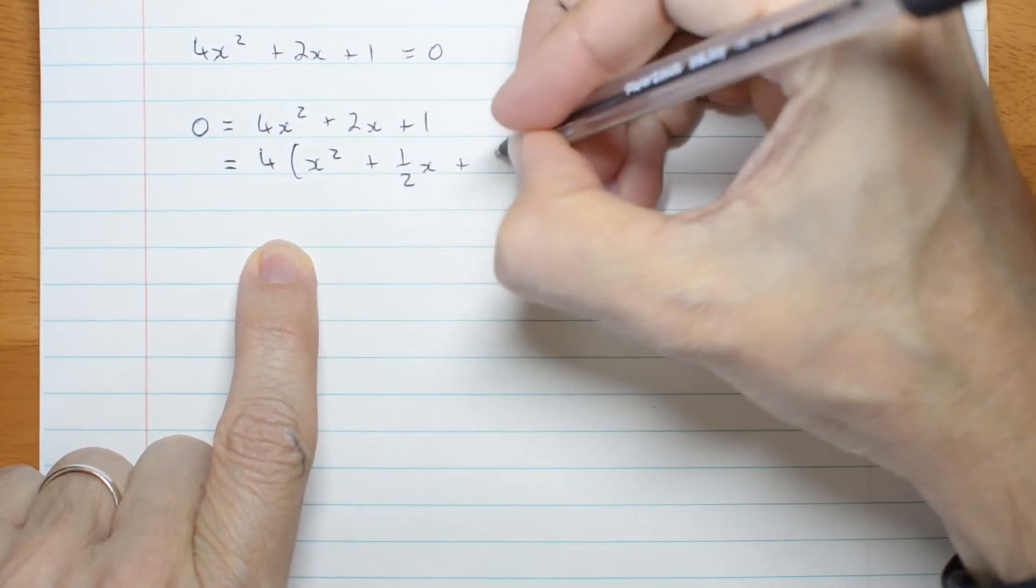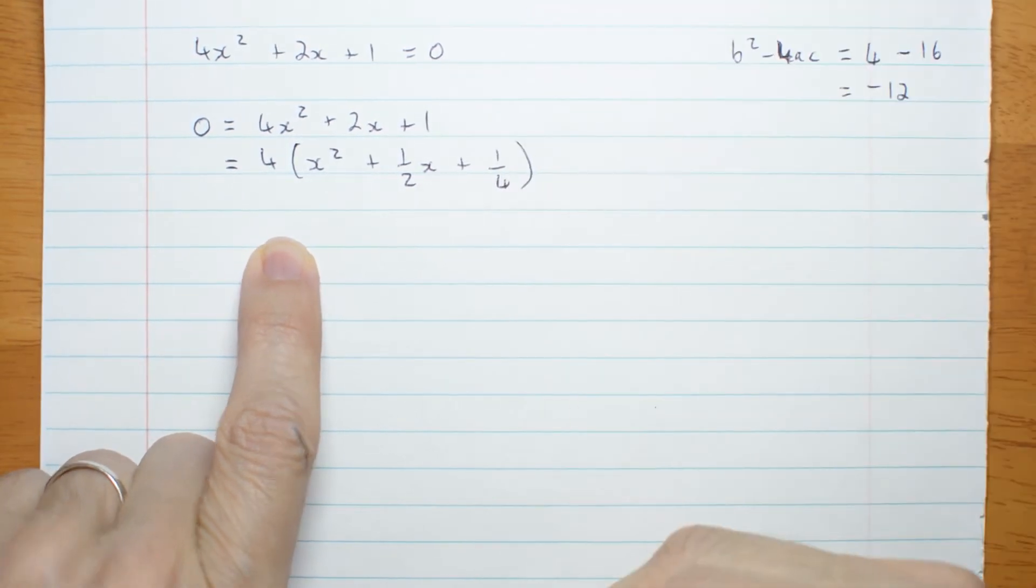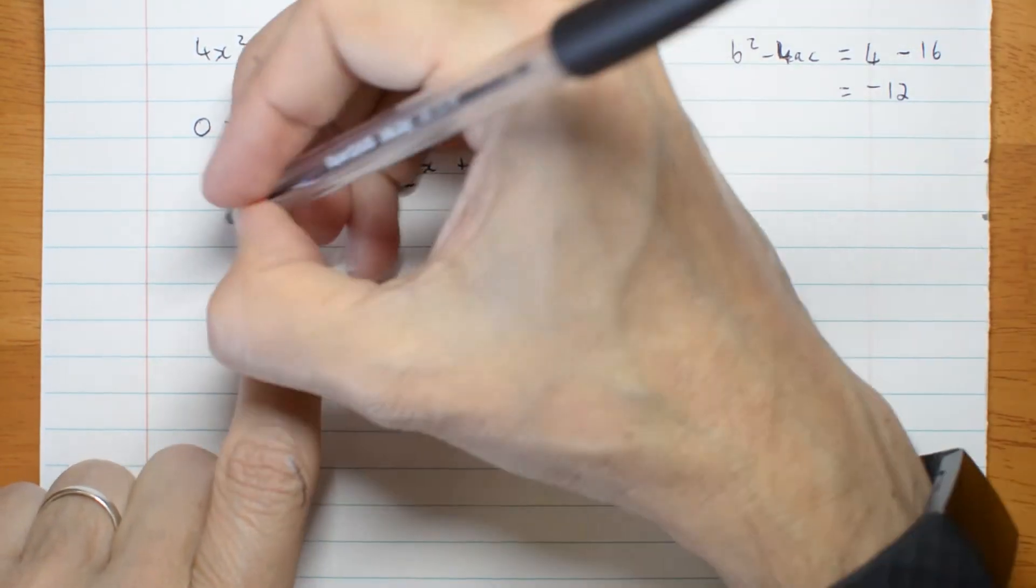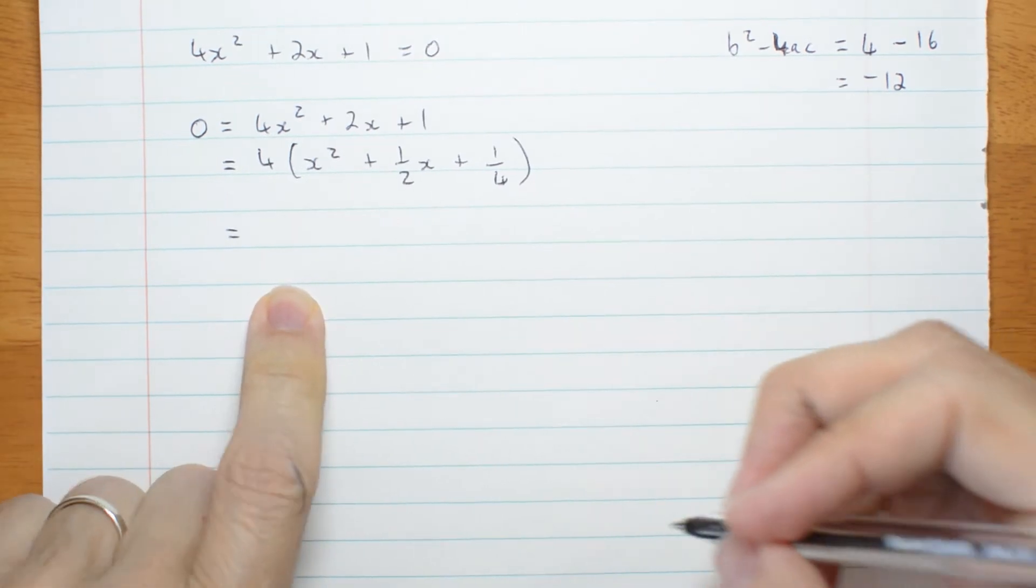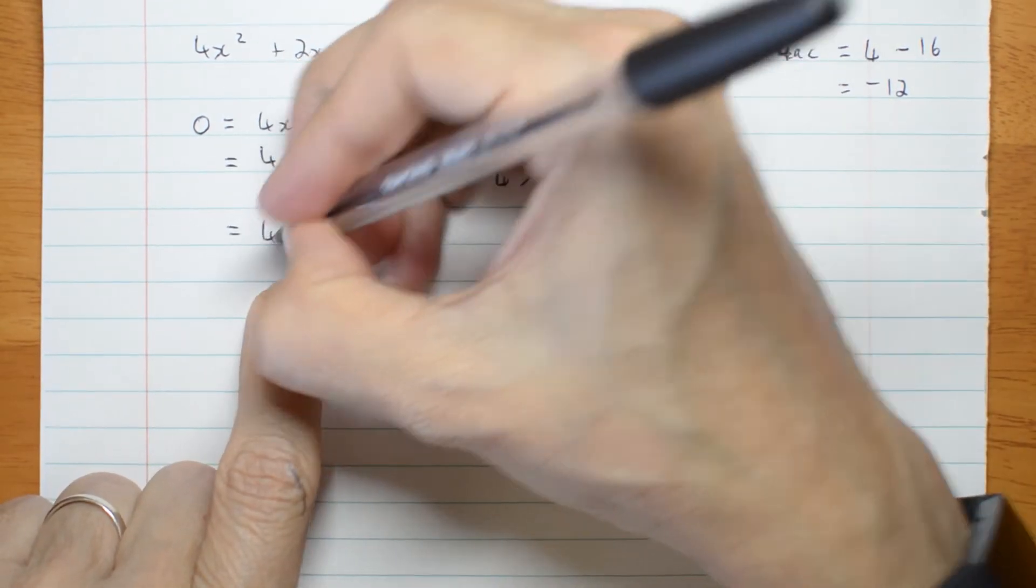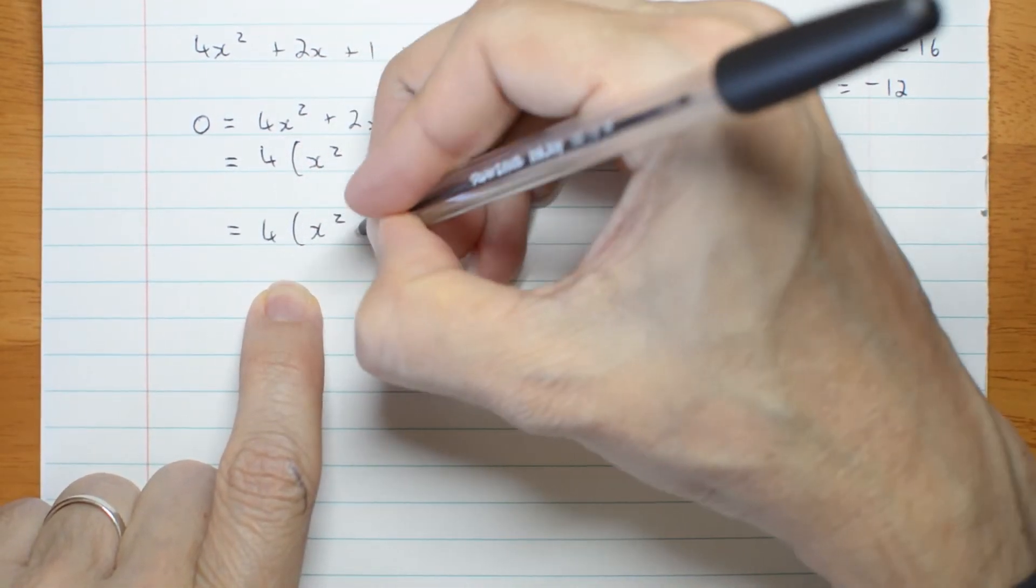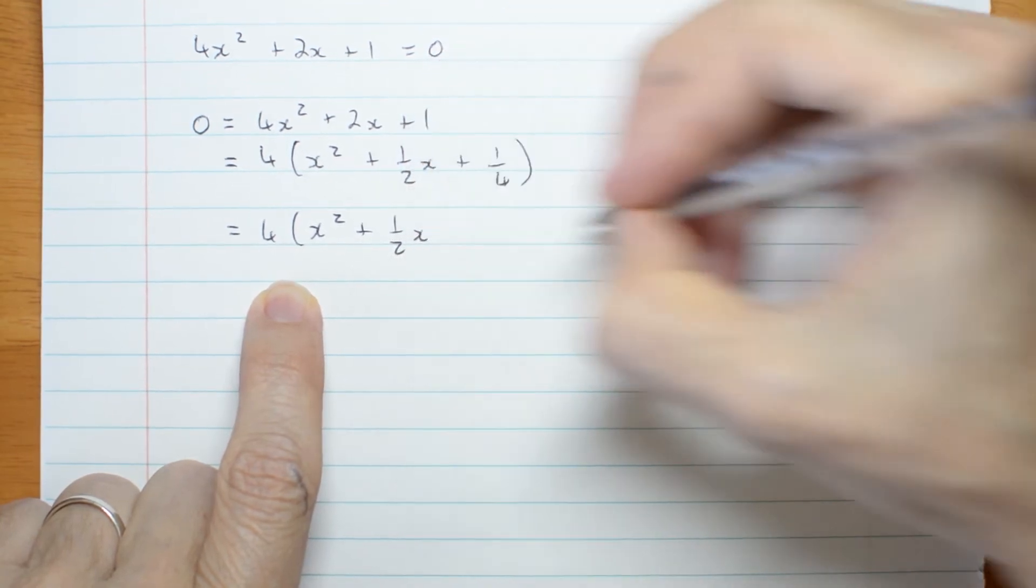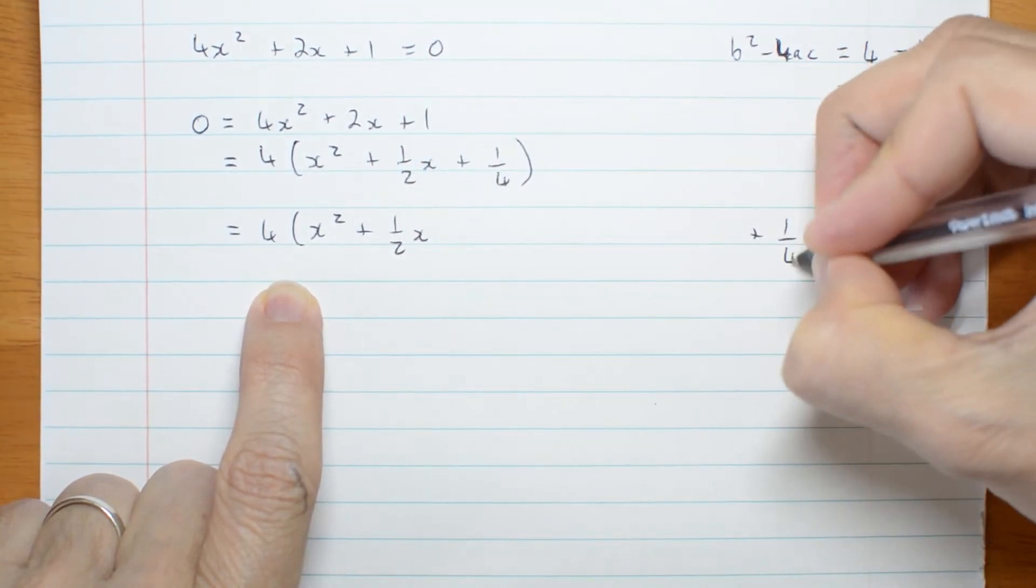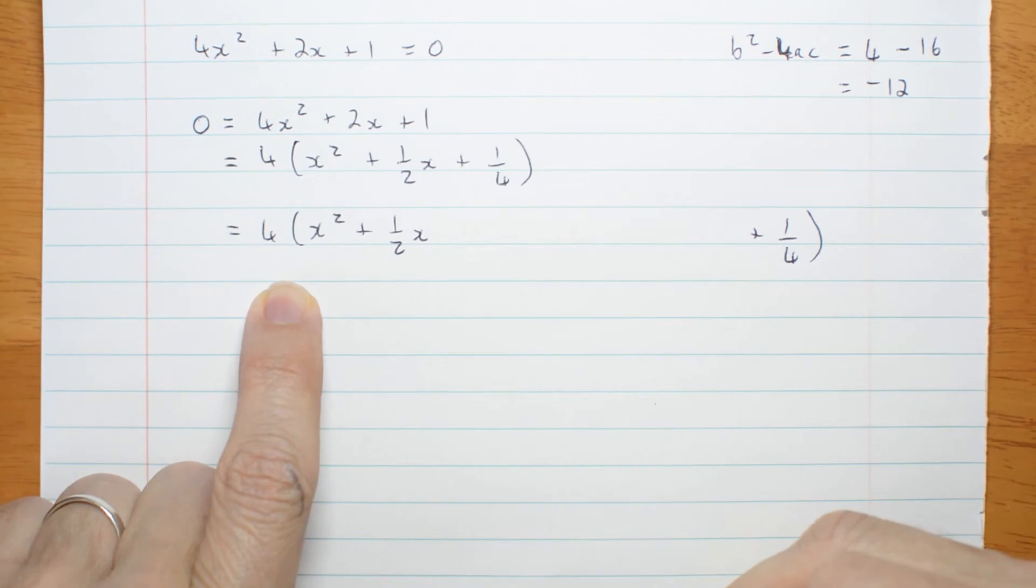Half x plus a quarter. All right. I need to complete the square. So plus a half x. Leave some space. Don't forget my quarter. Write it now so I don't forget later.